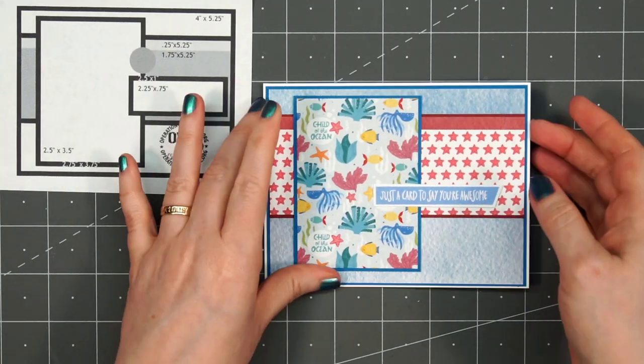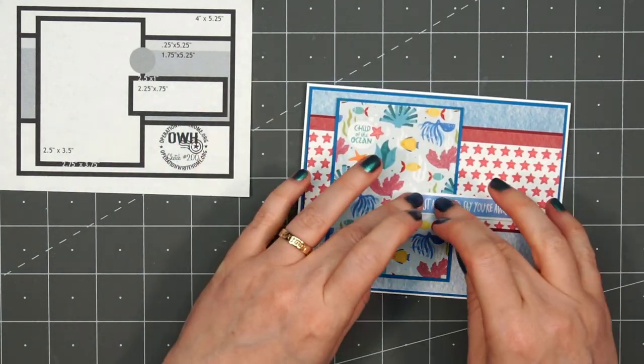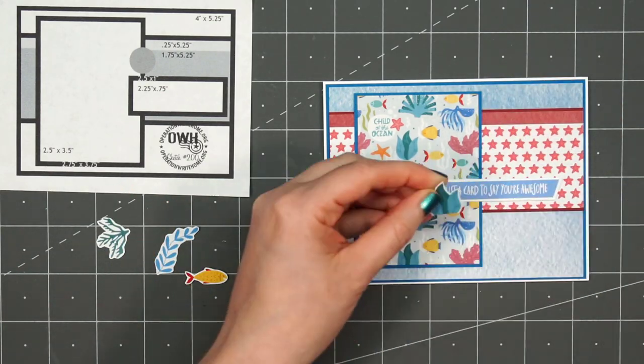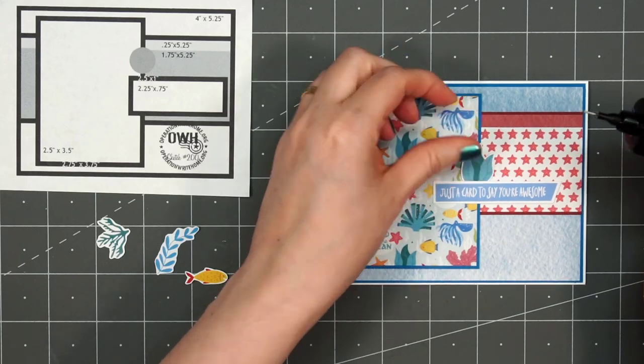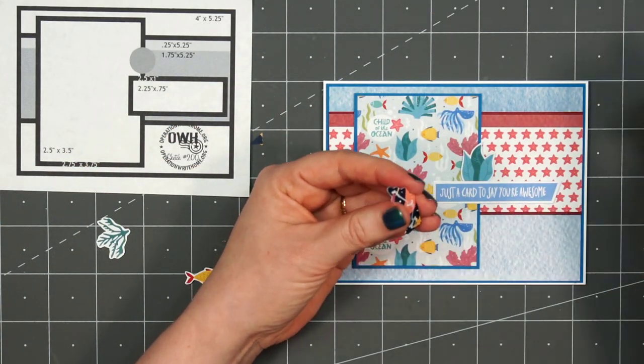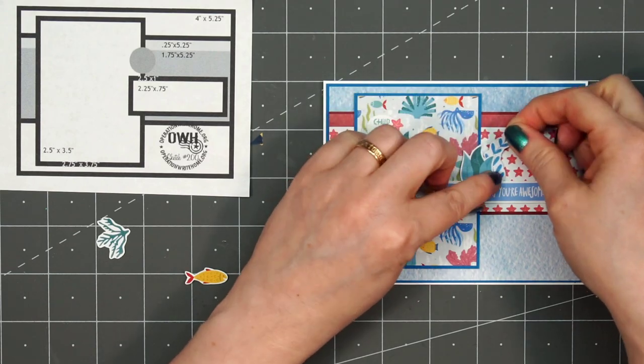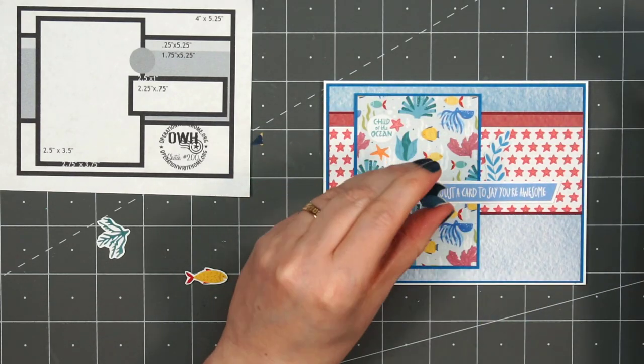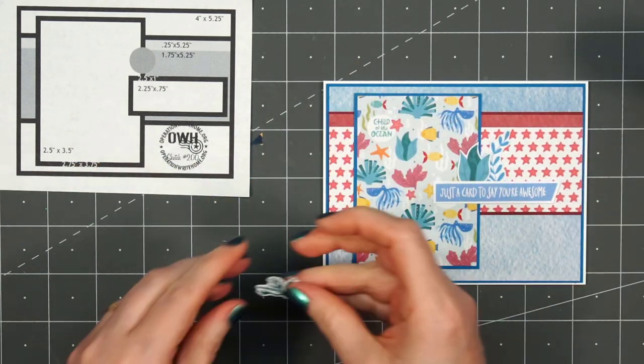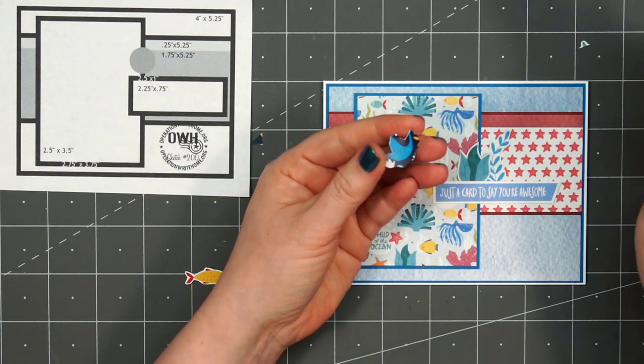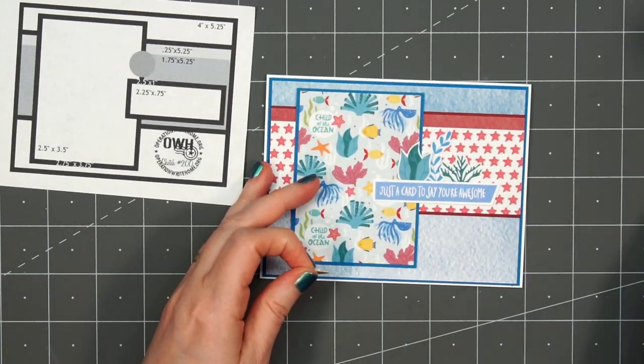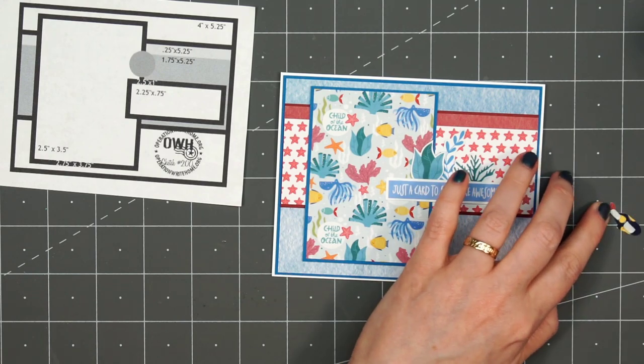I decided to cover up one of the child of the ocean sentiments. I'll also be adding several of the cut aparts. I have a few of the plants and this sweet little yellow and red fish. I'll tuck the plants behind the sentiment. I am trimming the very bottom so it's straight and then I'll just glue them in place. I decided to pop up the little fish so I have some thin foam squares on the back. I'll remove the release paper and adhere it in front of all of those little plants and right above the sentiment.